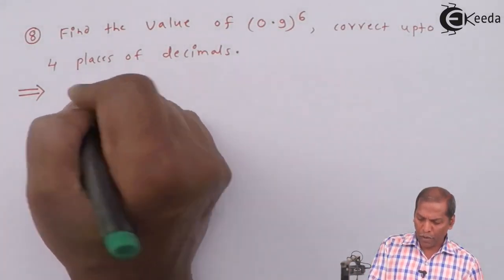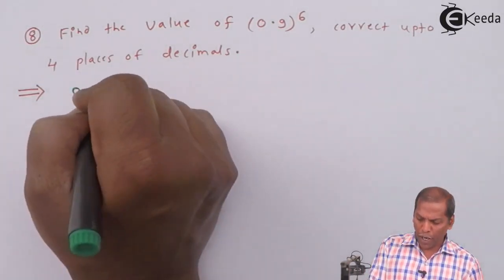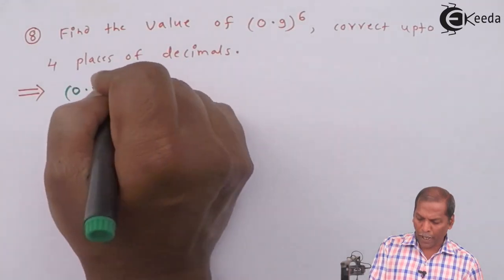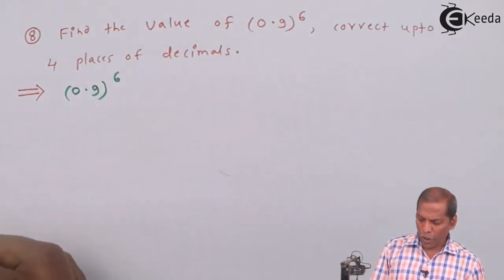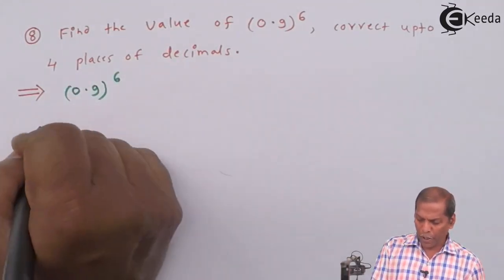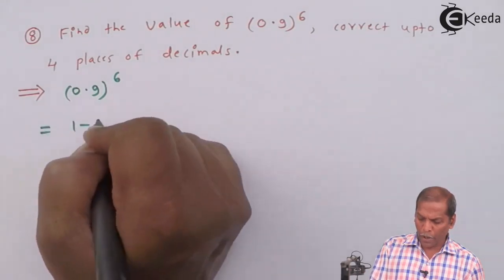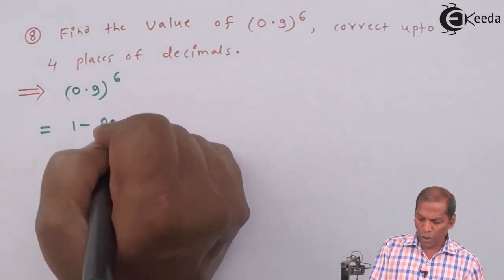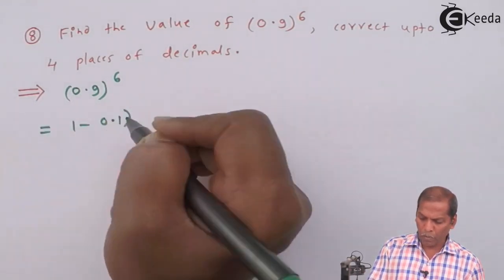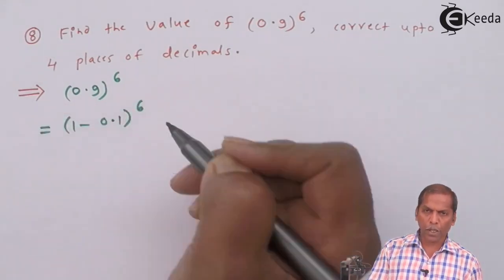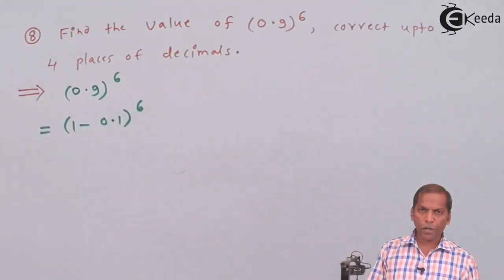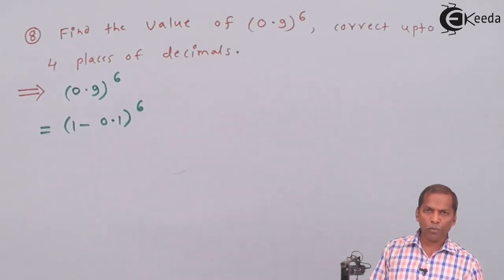First we write (0.9)^6. Now this can be written as (1 - 0.1)^6. By using the binomial theorem we get...